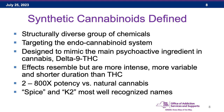Let's take a closer look at synthetic cannabinoids. These substances are a structurally diverse group of chemicals that target the body's endocannabinoid system — the body's own naturally occurring cannabinoid system. They are designed to mimic the main ingredient in cannabis, delta-9 THC. The effects resemble but are much more intense, more variable, and of shorter duration than THC. Estimated potency is up to 200 to 800 times more potent than naturally occurring cannabis. Common terms are Spice and K2.